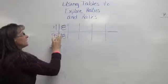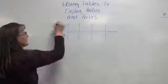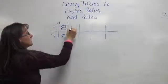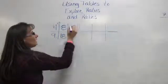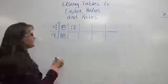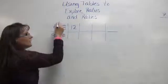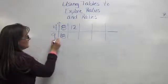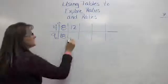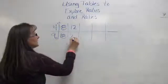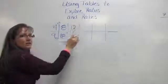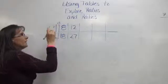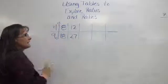Instead of multiplying by 2, let's multiply it by 3. When I multiply 4 times 3, I get 12 as my new numerator. Remember, whatever I do to the numerator, I must also do to the denominator. 9 times 3 is 27. So 12 twenty-sevenths is the same thing as 4 ninths.